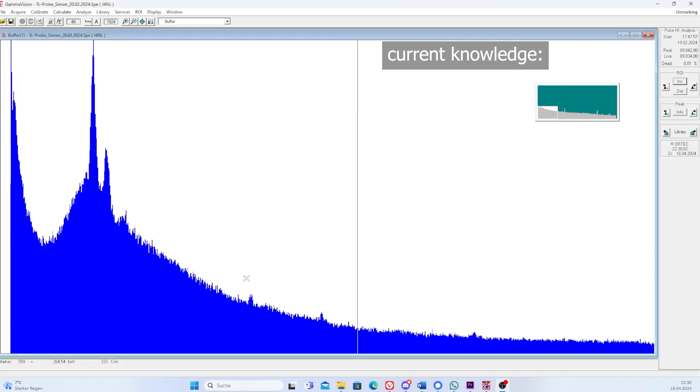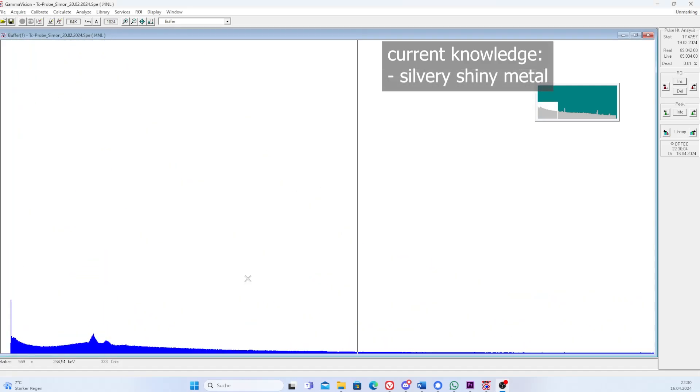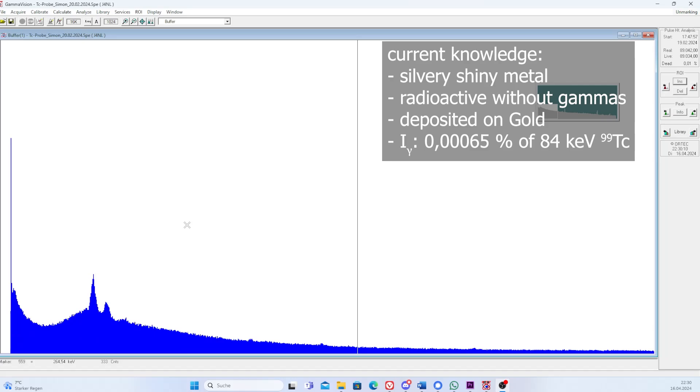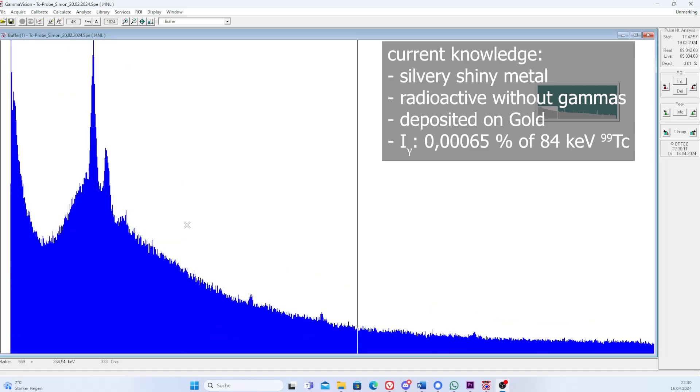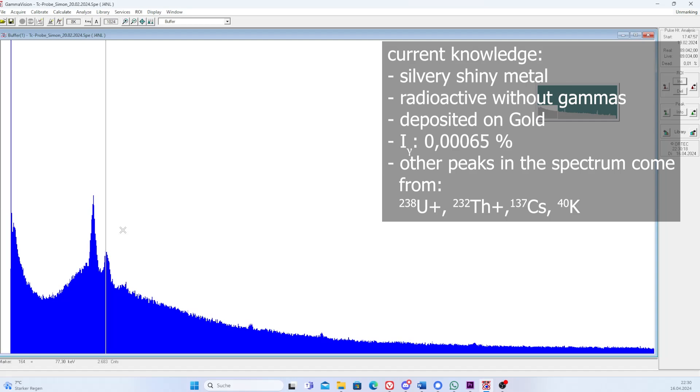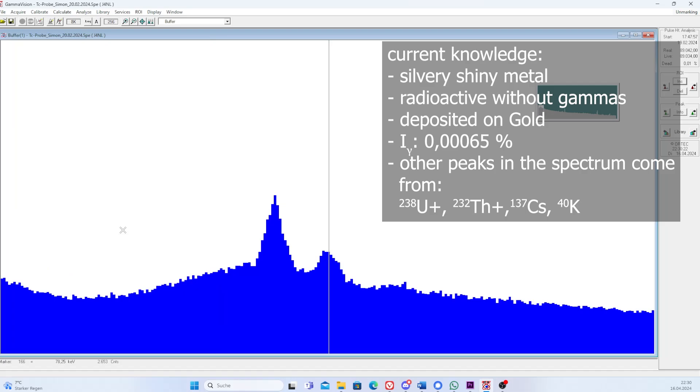And judging by the remaining gamma spectrum, it must only be technetium. Since we have a very shiny silvery metal, and it's radioactive, but it doesn't show any gamma lines. Sure, technetium has a 84 keV gamma line, but with an occurrence probability of 0.00065%, we can just barely see it if we measure gram amounts. And if that were to be uranium, thorium, or neptunium, or something else like that, we would have already seen lines with a relatively low occurrence probability. I measured for good 24 hours, but that's not good enough for me.